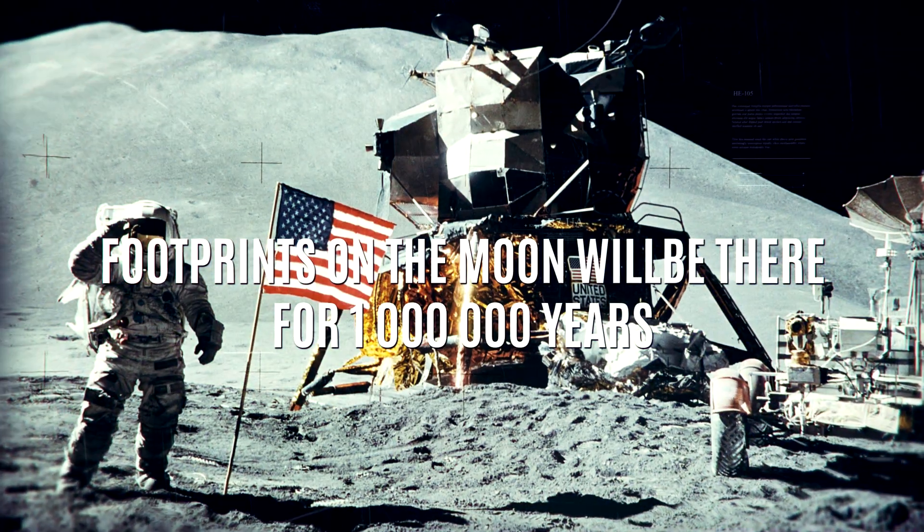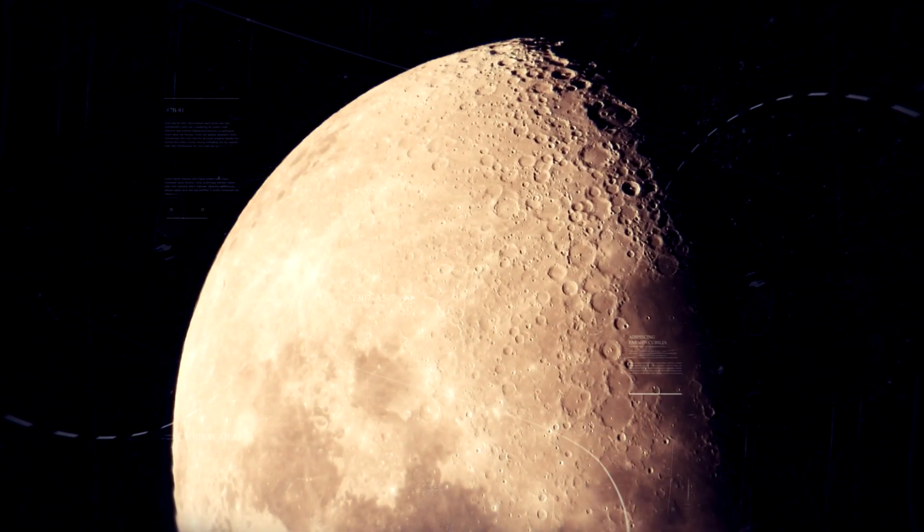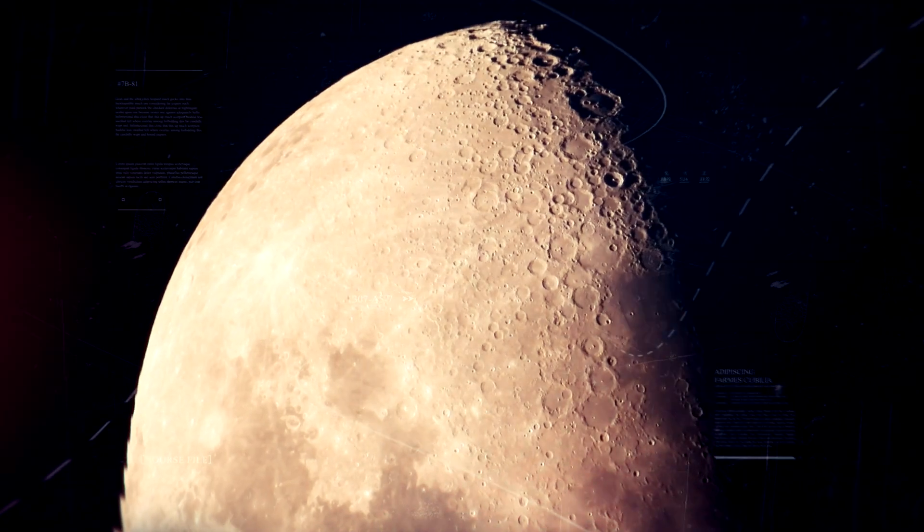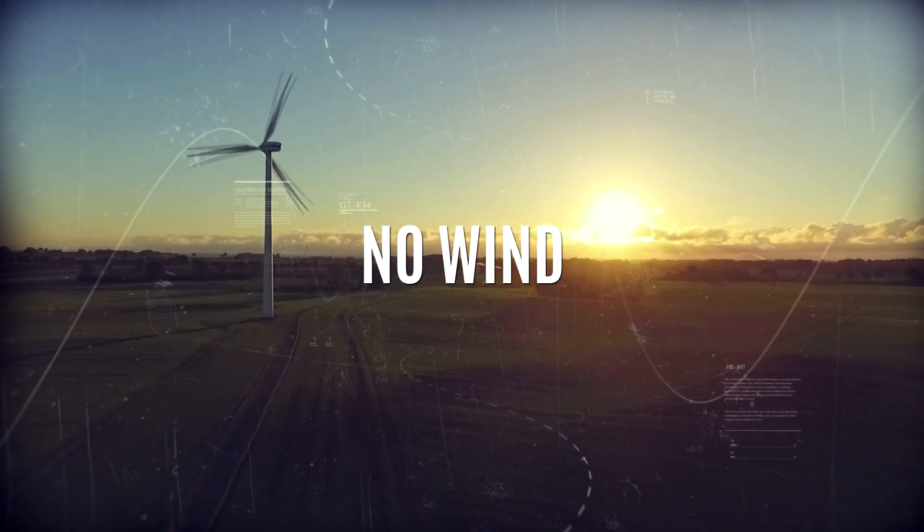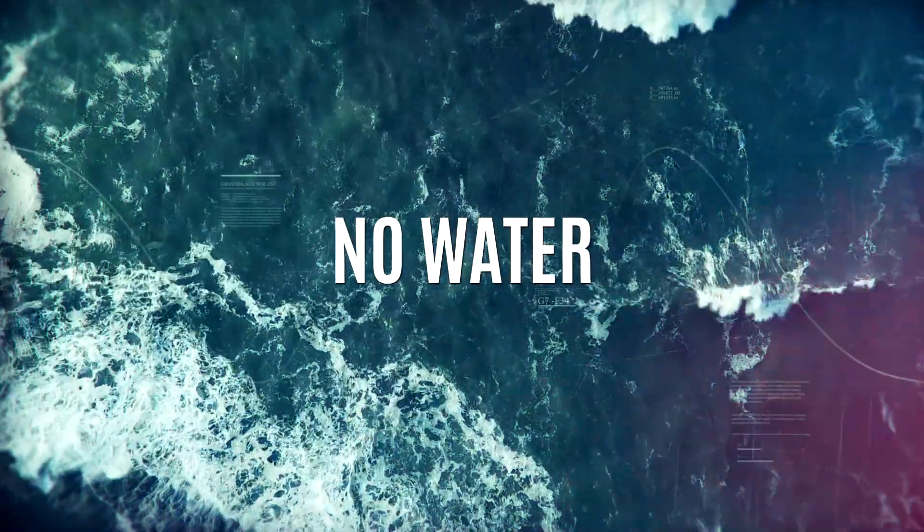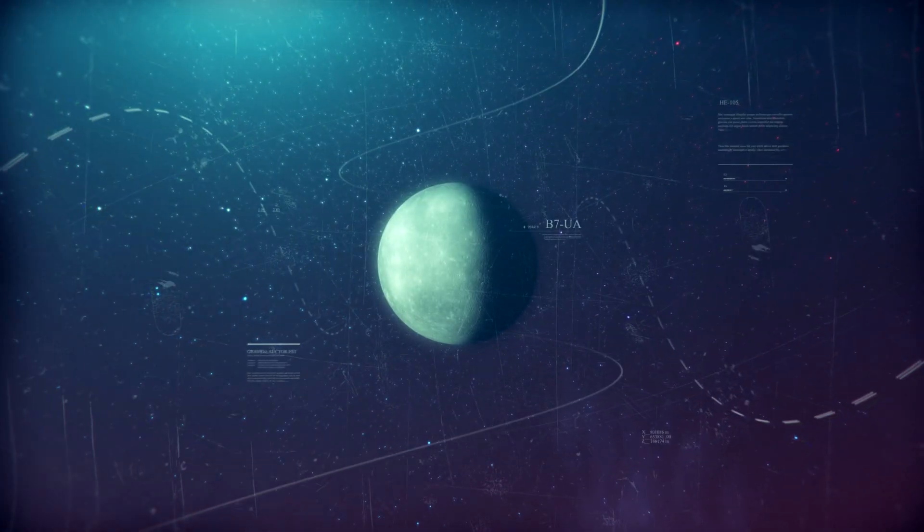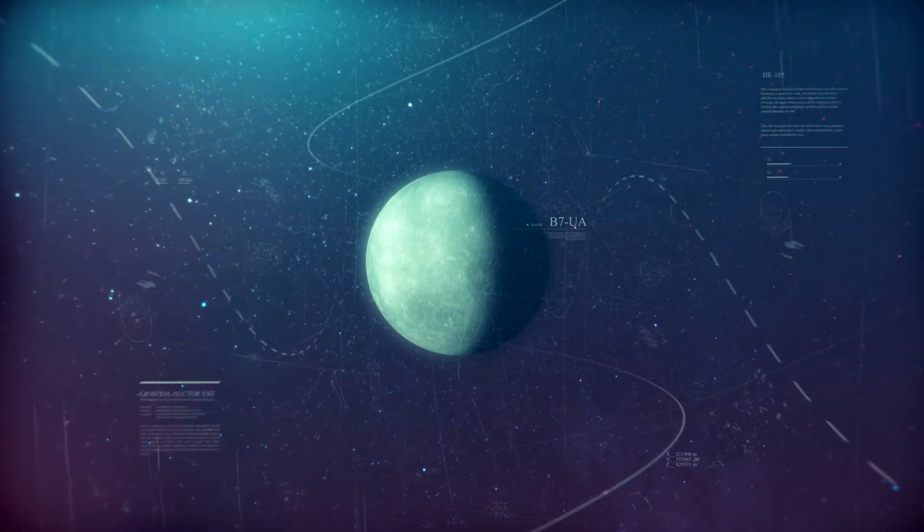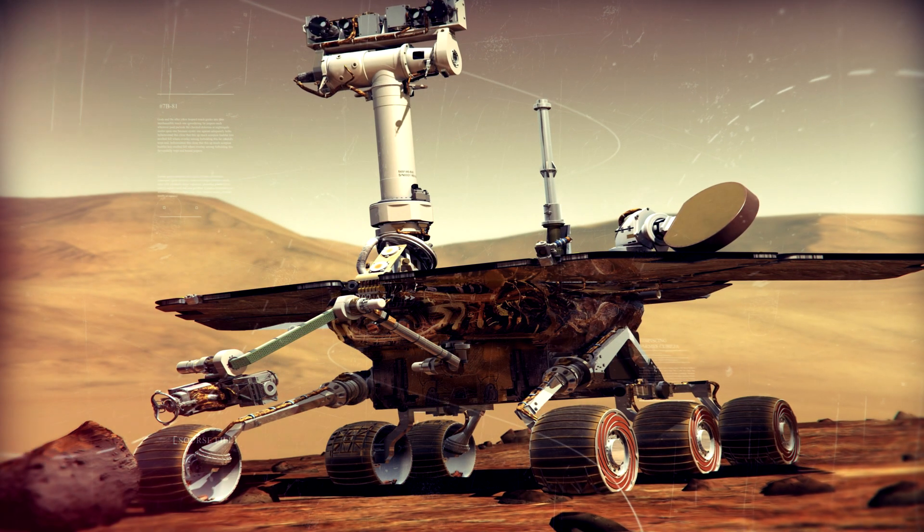The footprints on the moon will be there for 100 million years. The moon has no atmosphere, which means there is no wind to erode the surface and no water to wash the footprints away. This means the footprints of the Apollo astronauts, along with spacecraft prints, rover prints and discarded material, will be there for millions of years.